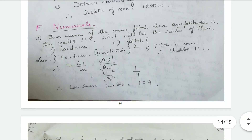Numerical 1: Two waves of the same pitch have amplitudes in the ratio 1:3. What will be the ratio of their loudness and pitch? Loudness is proportional to amplitude squared. So L1 by L2 equals A1 squared by A2 squared, which equals 1 by 9. The loudness ratio is 1:9, and since the pitch is the same, the pitch ratio is 1:1.